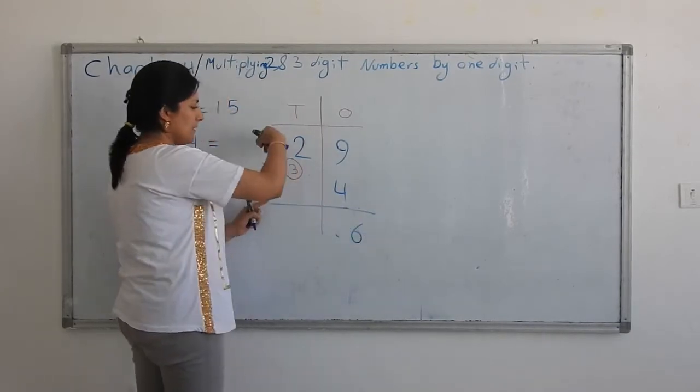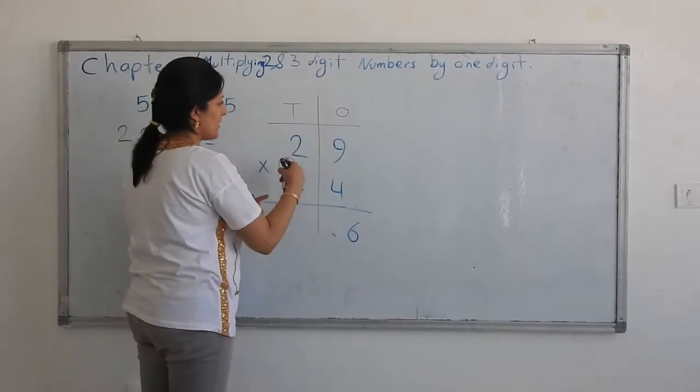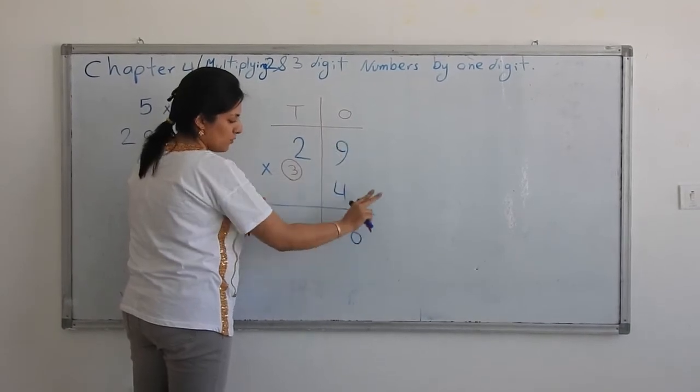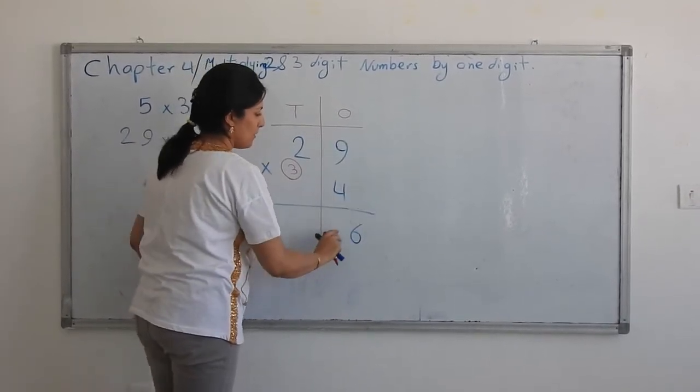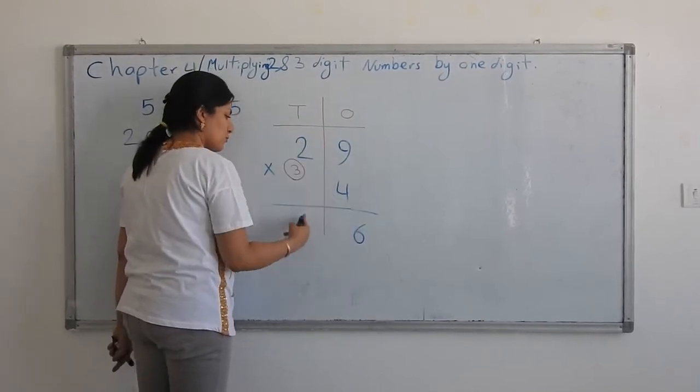Put down 6 and carry 3 to the next house. The next door is 10s. So, now, the 1s, let's say 1s house, became ended with 6. Finish.